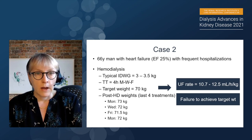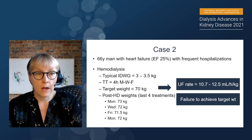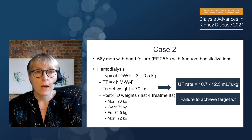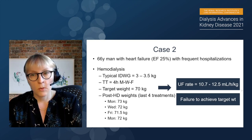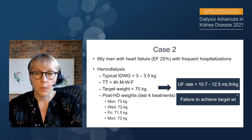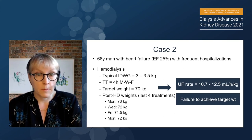Case two is a 66-year-old man with heart failure, an ejection fraction of 25%, and frequent hospitalizations. He tends to gain between three and three and a half kilos with a four-hour treatment time, Monday-Wednesday-Friday. His target weight is about 70 kilos, but on the last four treatments he hasn't met it — leaving dialysis at 73, 72, 71.5, and 72 kilos. His ultrafiltration rates are 10.7 to 12.5 mLs per hour per kg, but he has this persistent problem of not achieving his dry weight.